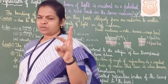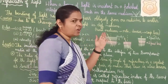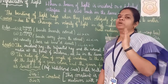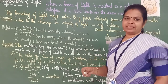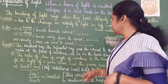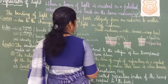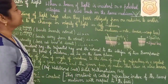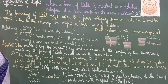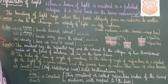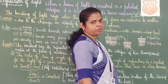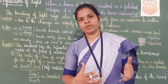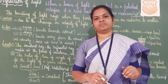In physics, all definitions, rules, and laws are very important. You can't write them on your own — better you understand the concept and then write. Bending of light rays when they pass obliquely from one medium to the other is called refraction of light. Now, when this refraction is happening, you should know it is due to the change in velocity of light in different media.